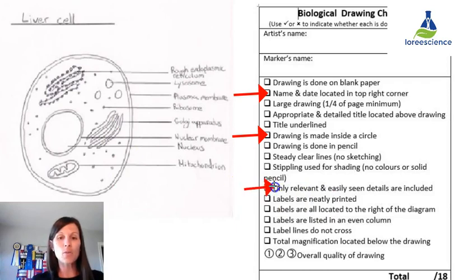The next place they would lose a mark is only relevant and easily seen details. With the microscopes we have, we cannot see the rough ER. You cannot see ribosomes or Golgi apparatus. So don't put down things that you know should be there but you can't see. So if you can't see it, you cannot put it in your diagram. So be careful. A lot of times people will refer to images on the internet or in their textbook and there are a lot more details because they use a lot better microscopes than we have in class. So make sure you only label and draw what you can see in class.